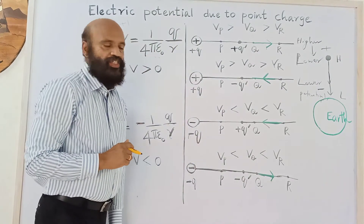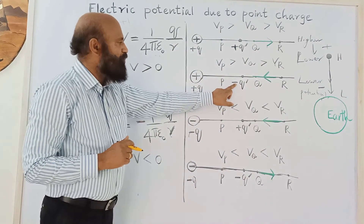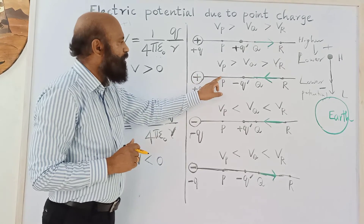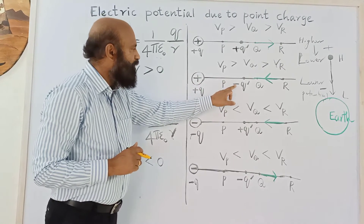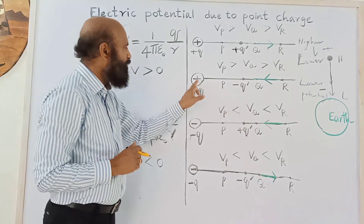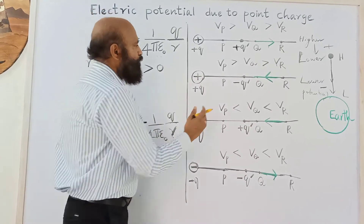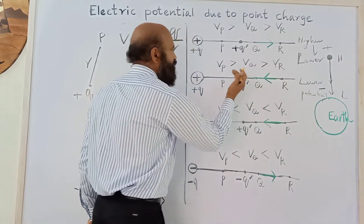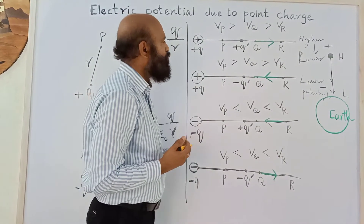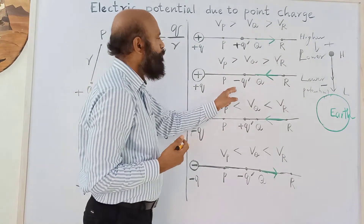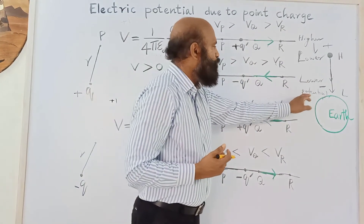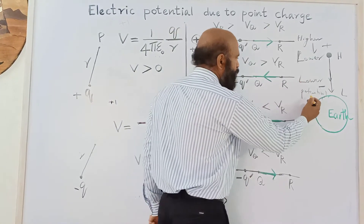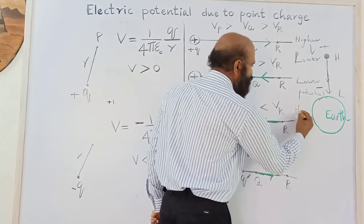Now consider placing a negative test charge near a positive source charge. For the positive source, nearer points are at higher potential. But the negative test charge is attracted by the positive source charge, so it moves toward the source — in the opposite direction. That means the negative charge moves from a lower potential to a higher potential.